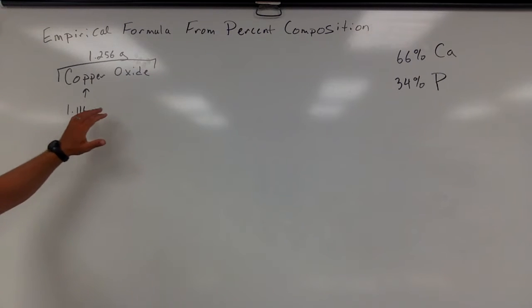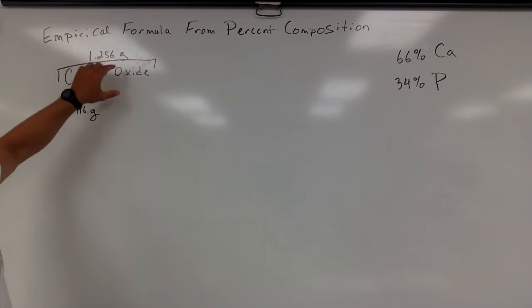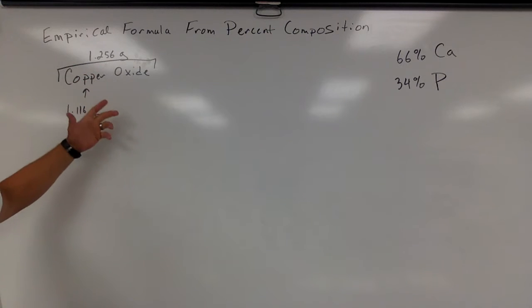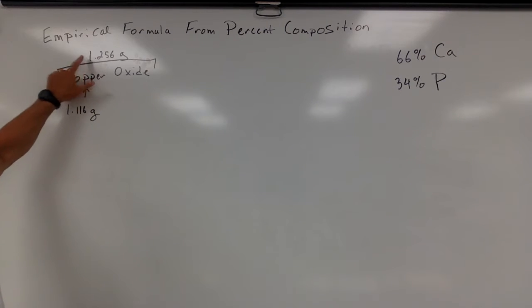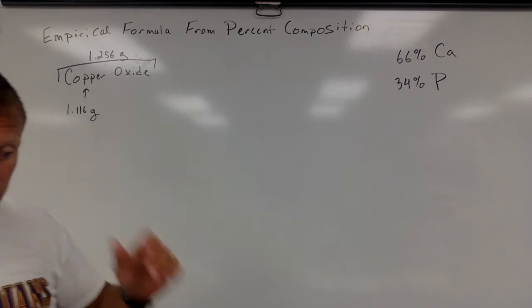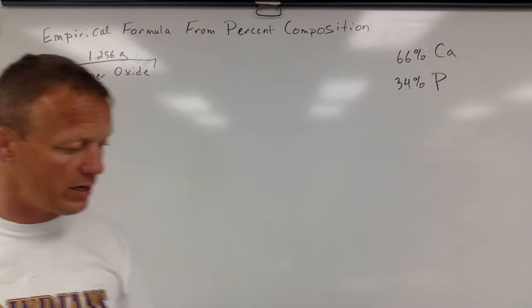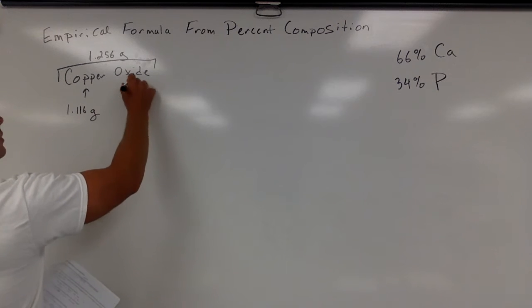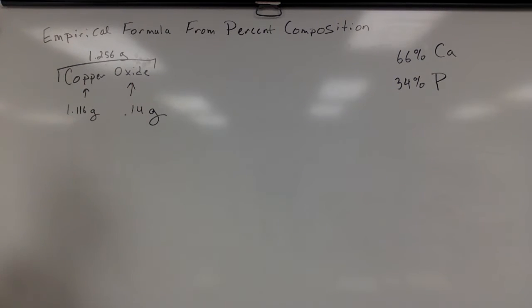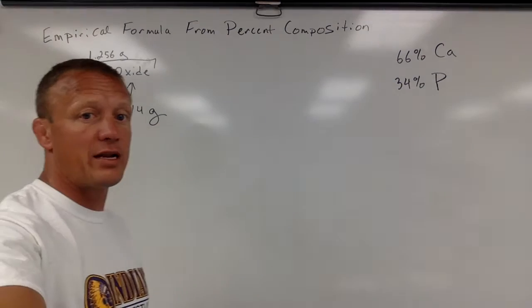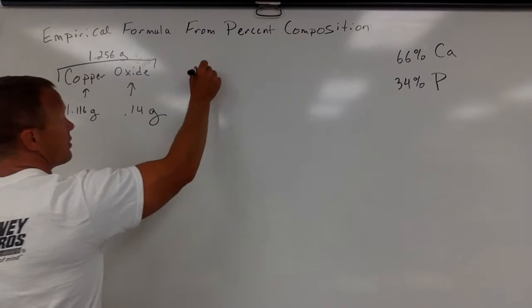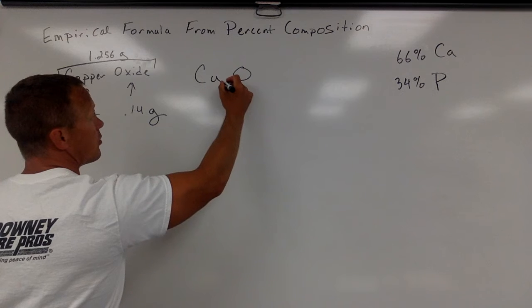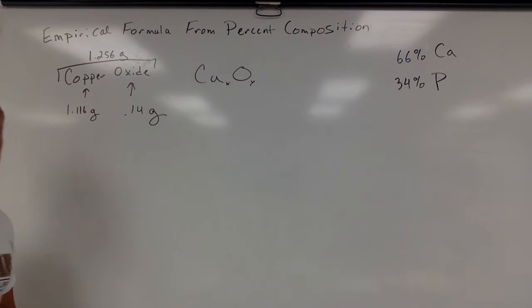So the first problem says you have some red copper oxide and it tells you that the mass of the red copper oxide is this. They react it with hydrogen and it produces that much copper. The whole compound was 1.256 and that much copper was made. That means we had 0.14 grams of oxygen. So we're trying to get the formula of this copper oxide. We obviously know that CuO, we're trying to figure out what number goes there and what number goes there. Is it a one-to-one ratio, is it a two-to-one, what is it?